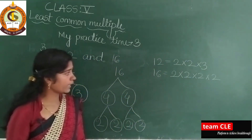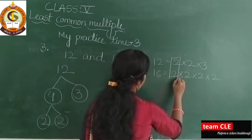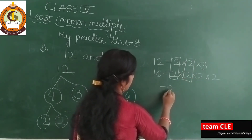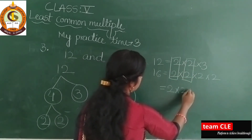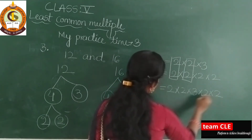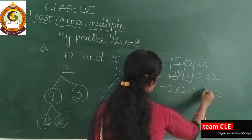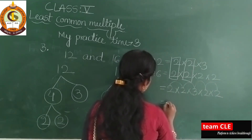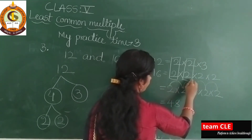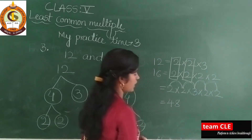Now you need to check the common factors. Here 2 and 2 are prime factors. I will take only one time. So this is 2, this is 2, this is 3, this is 2, this is 2. Now multiply: 2 × 4 = 8... 4 threes are 12. Next 12 × 4 = 48... so the LCM of 12 and 16 is 48.